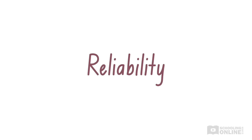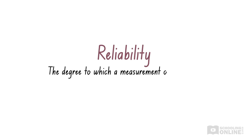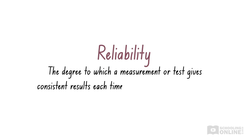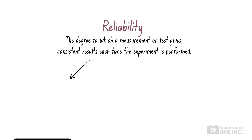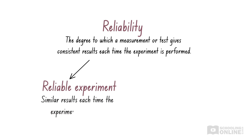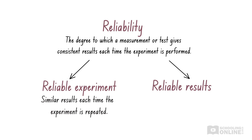Like accuracy, reliability is an important aspect of science experiments. Reliability is the degree to which a measurement or test gives consistent results each time the experiment is performed. This means a reliable experiment produces similar results each time it is repeated. If the results are similar to each other, then they are reliable.